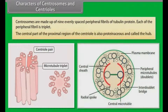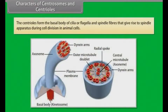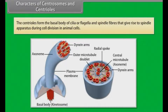The central part of the proximal region of the centriole is also proteinaceous and called the hub. This hub is connected with tubules of the peripheral triplet by radial spokes made of protein. The centrioles form the basal body of cilia or flagella and spindle fibers, which give rise to the spindle apparatus during cell division in animal cells.